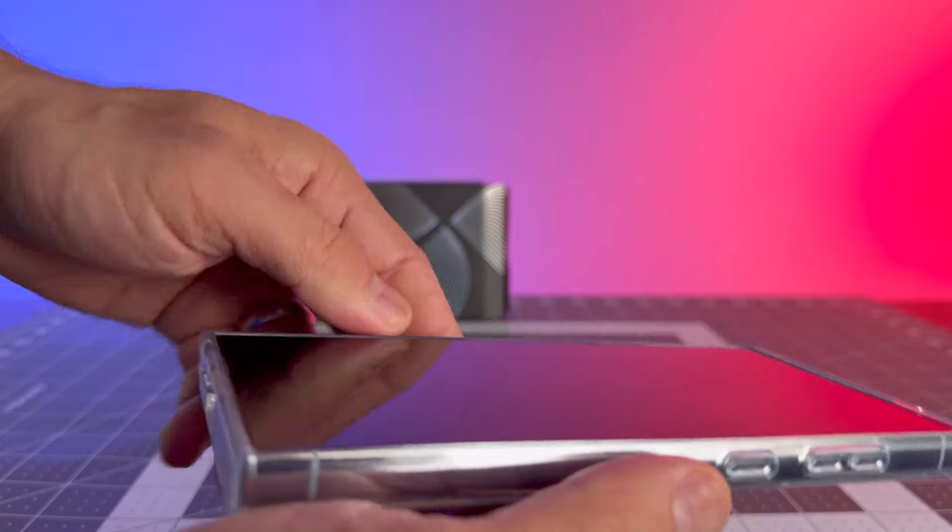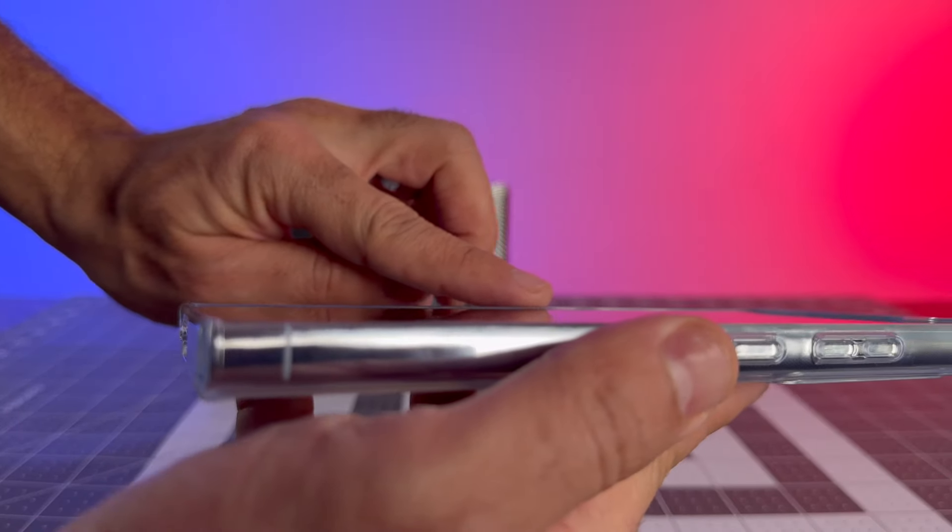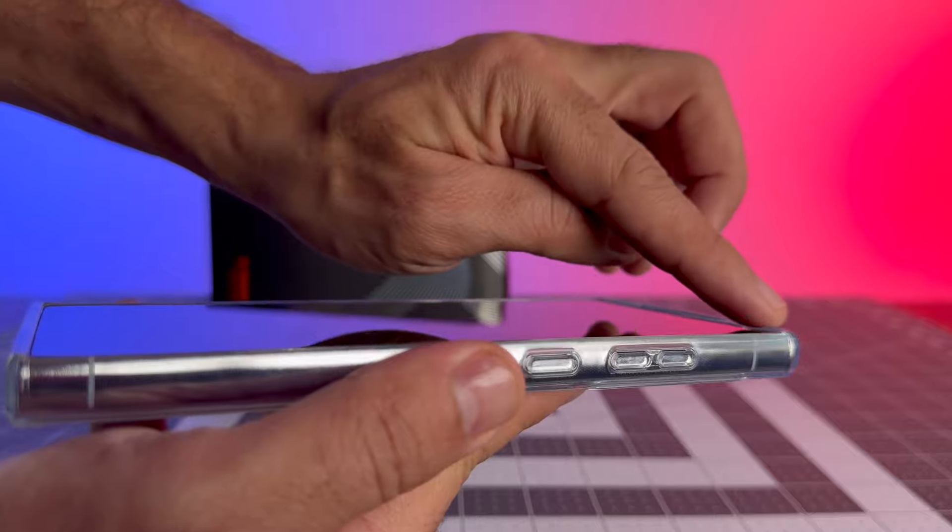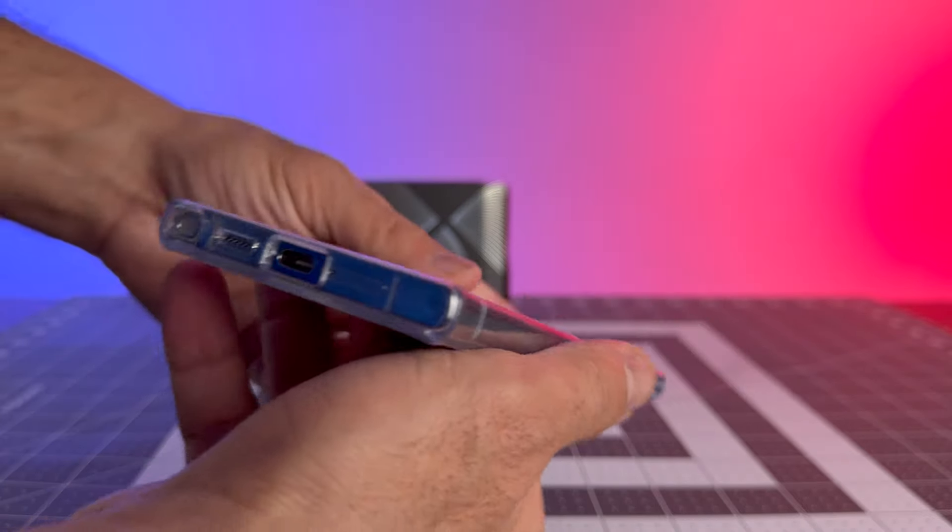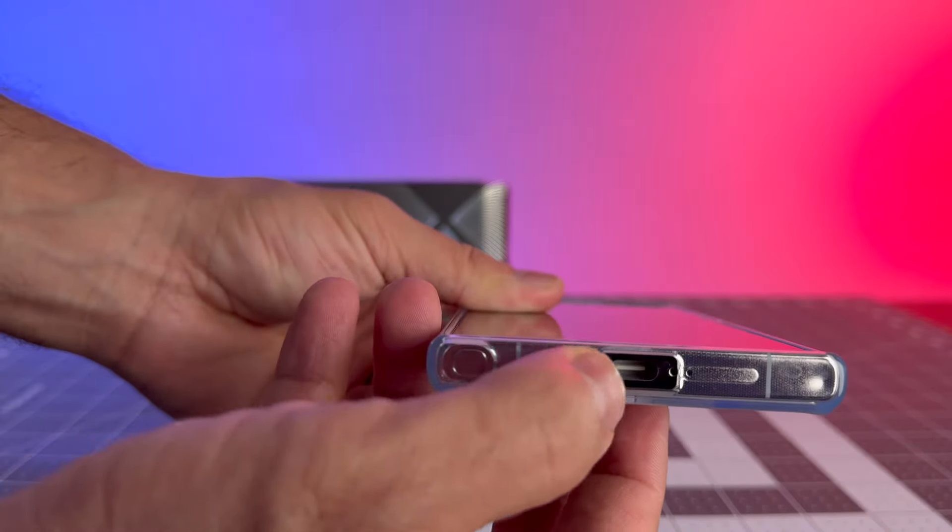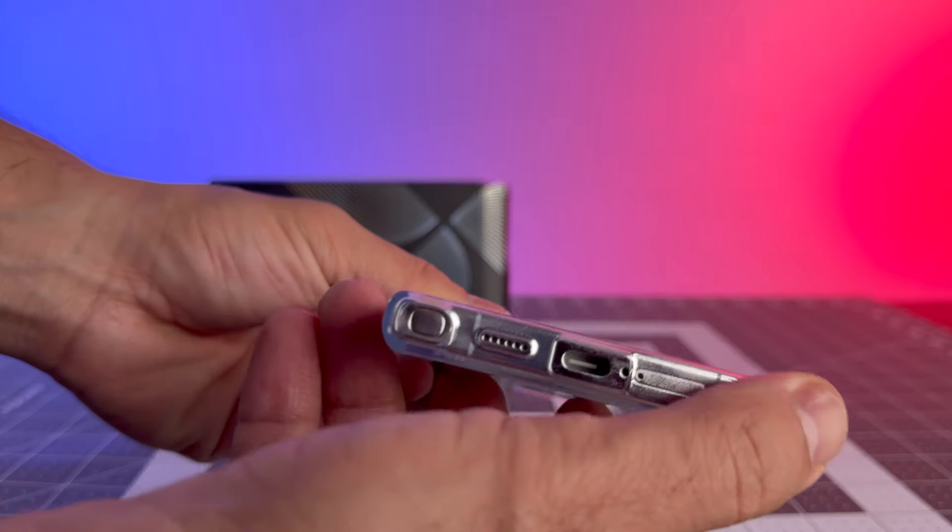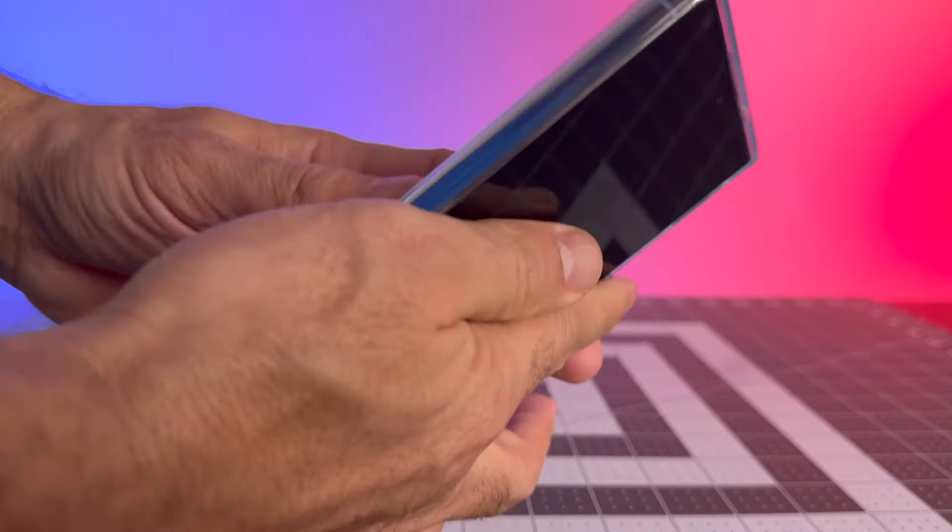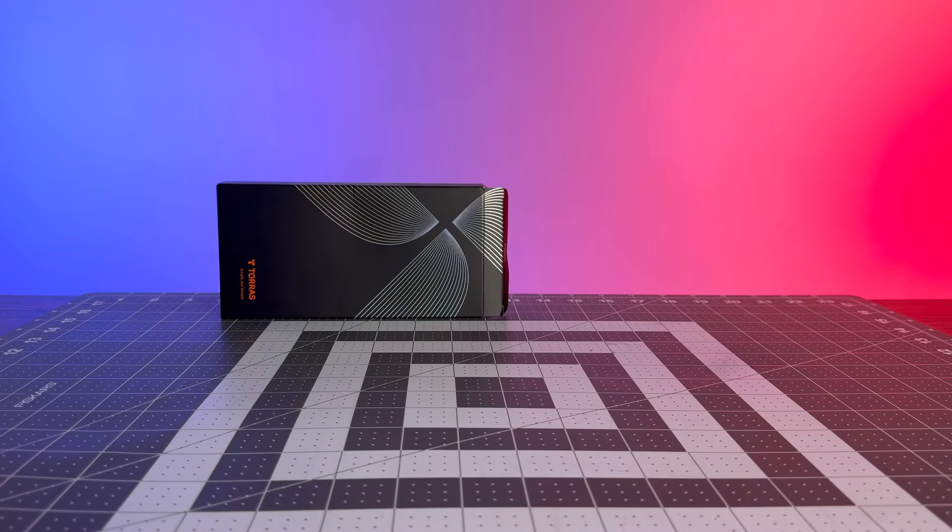So if you're looking for top-notch protection, style, and magnetic magic for your Samsung Galaxy S24 Ultra, the Taurus shockproof magnetic case is the way to go. Check it out below for more details. Until next time, keep your S24 Ultra protected and stylish. Thank you for watching.